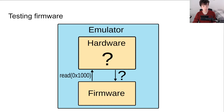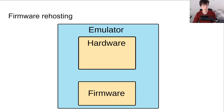One solution to this problem is to handwrite device emulators for each hardware device that the firmware interacts with. The primary downside of this approach is that creating hardware models for each system you want to test is time-consuming. We would like to automate this process. This is the goal of a new technique called firmware re-hosting. The key idea is to automatically model the peripherals so that with only the firmware, and perhaps a bit of auxiliary information, you can successfully emulate the system.